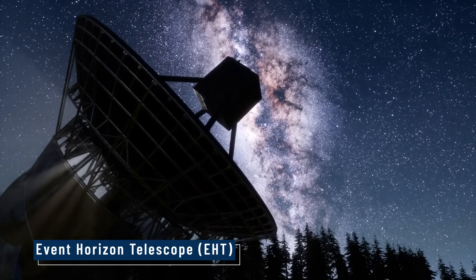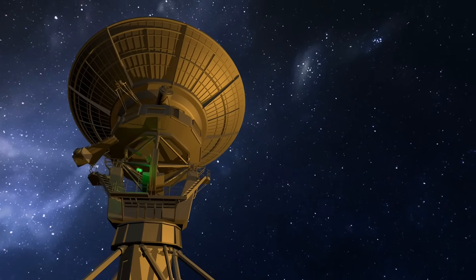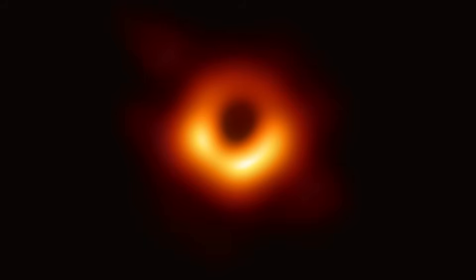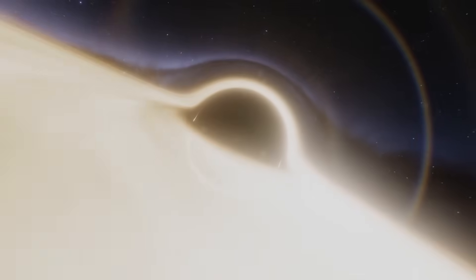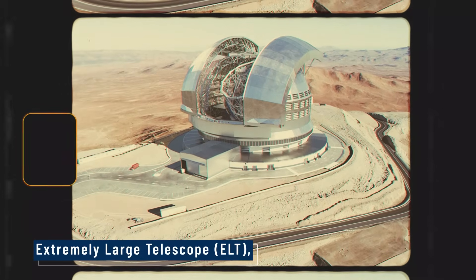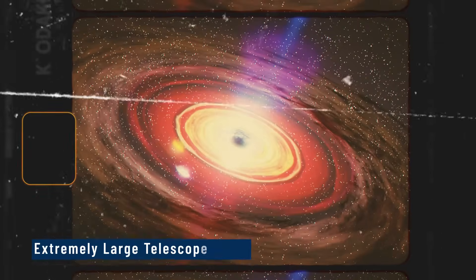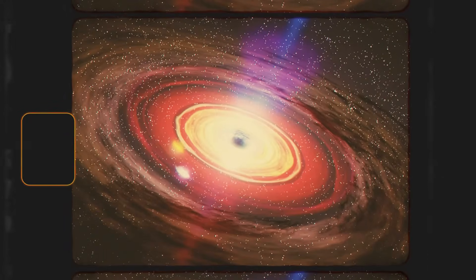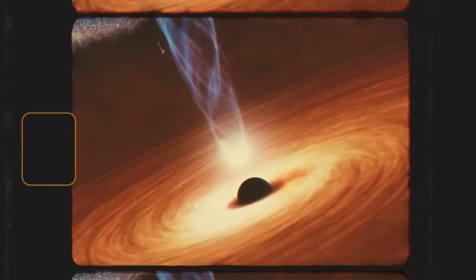Another key tool is the Event Horizon Telescope, EHT, a planet-sized array of radio telescopes. In 2019, it gave us the first-ever image of a black hole's shadow in galaxy M87. That iconic orange ring wasn't just a picture, it was proof. Coming soon is the Extremely Large Telescope, ELT, still under construction. It will be able to study black holes in greater detail than ever before, watching how matter swirls around them and falls in.